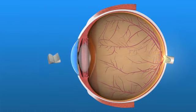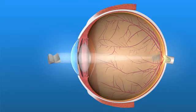As we age, our lens becomes less flexible and resists changing shape, so our ability to see up close is diminished.